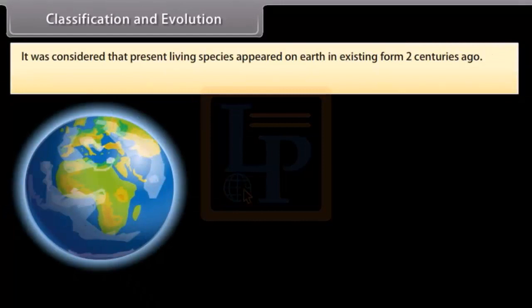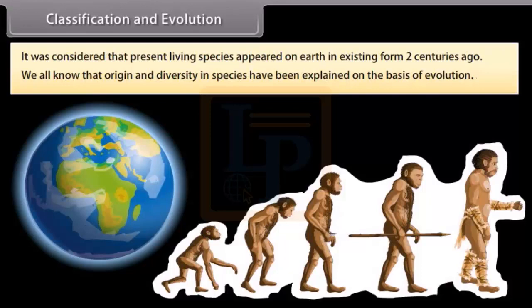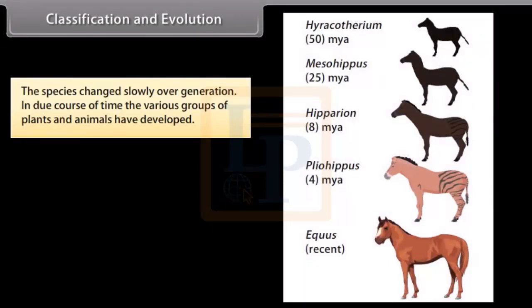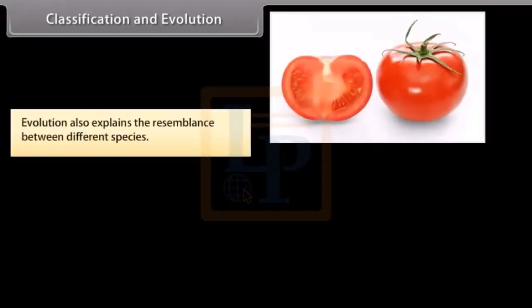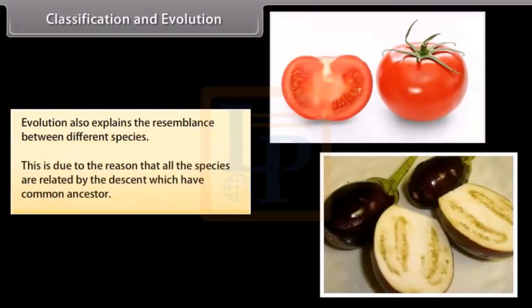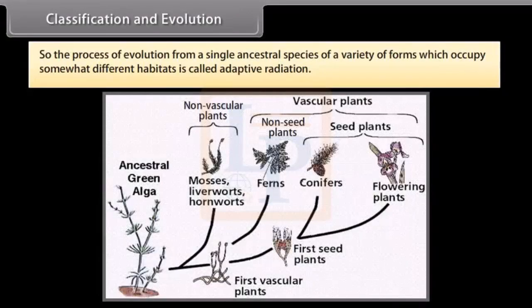It was considered that present living species appeared on earth in their existing form two centuries ago. Origin and diversity in species have been explained on the basis of evolution. The species changed slowly over generations, and in due course of time various groups of plants and animals developed. Many different species evolved, each adapted for a particular environment. The process of evolution from a single ancestral species into a variety of forms occupying different habitats is called adaptive radiation.